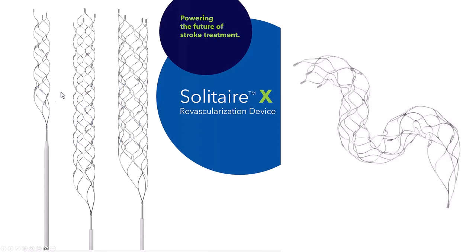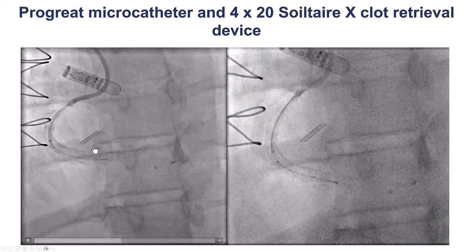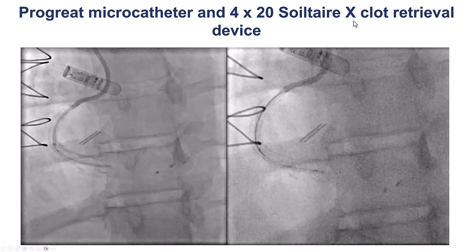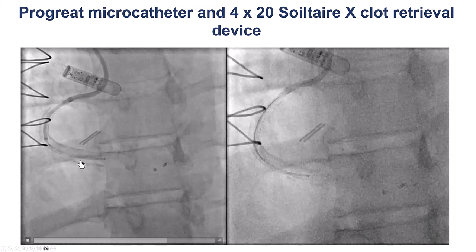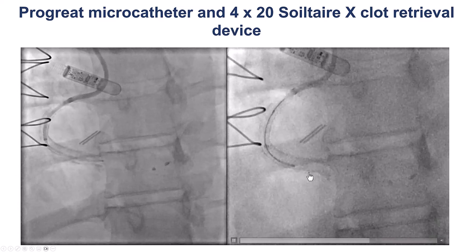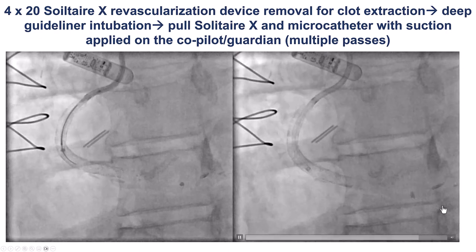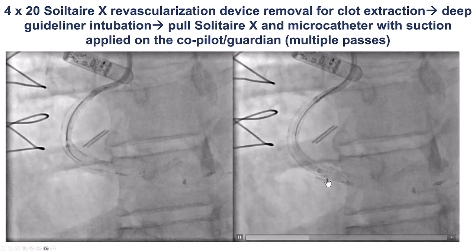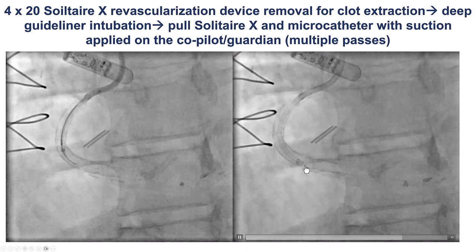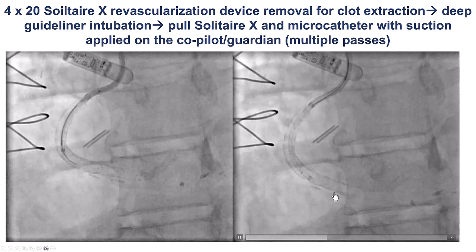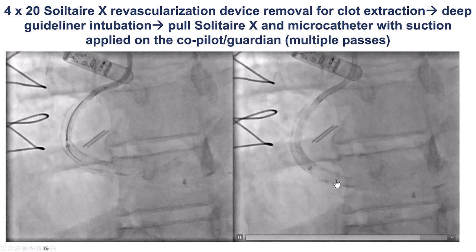We then used a device commonly used in stroke intervention: the Solitaire X, essentially a small nitinol mesh that can trap and remove thrombus — an off-label use in the coronary circulation. We used an antegrade microcatheter and then a 4 by 20 millimeter Solitaire X, deploying it inside the thrombus as seen by the markers on imaging. This did help — we retrieved some large thrombus pieces. We then did multiple aspirations using a guide extension catheter, a GuideLiner advanced deeply into the right coronary artery.